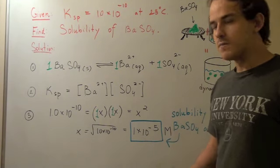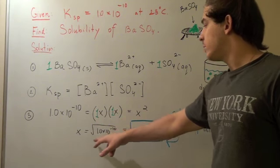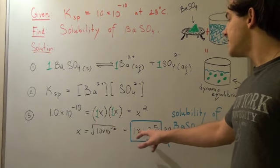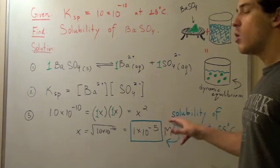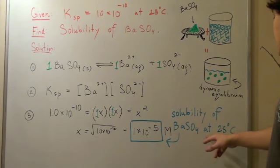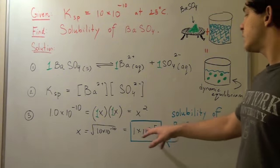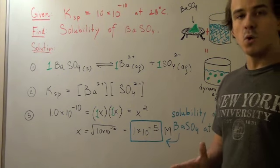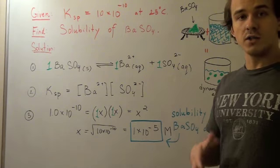Finally, we use algebra. We take the radical and get x equals 1 times 10 to the negative 5 molar. That is, the solubility of barium sulfate in water at 25 Celsius is 1 times 10 to the negative 5 molar, or moles per volume.